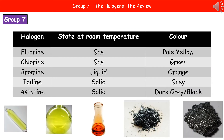We need to know a few key bits of information about our halogens. The first thing is their state at room temperature, and the second is their colour. Exam questions are likely to give you information about chlorine, bromine, and iodine, and ask you to predict fluorine and astatine. Starting at the top of the group, fluorine and chlorine are gases, bromine is the only liquid, and iodine and astatine are solids.